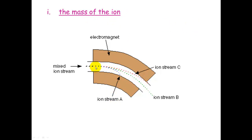So let's have a look at the mass of the ion. Here we've got three different streams. So a mixed ion stream is coming into the mass spectrometer. You'll see that ion A here is deflected the most, and ion C is deflected the least. So these ones here are the lightest ions. These deflect the most.